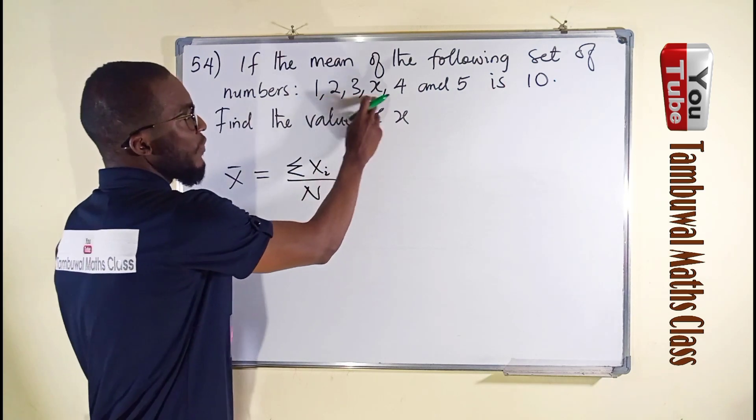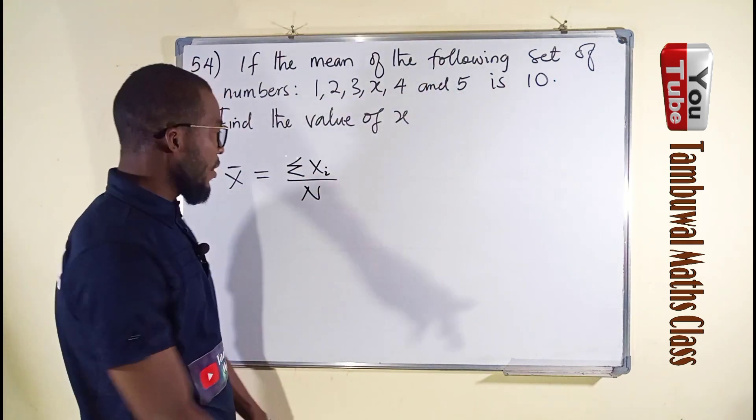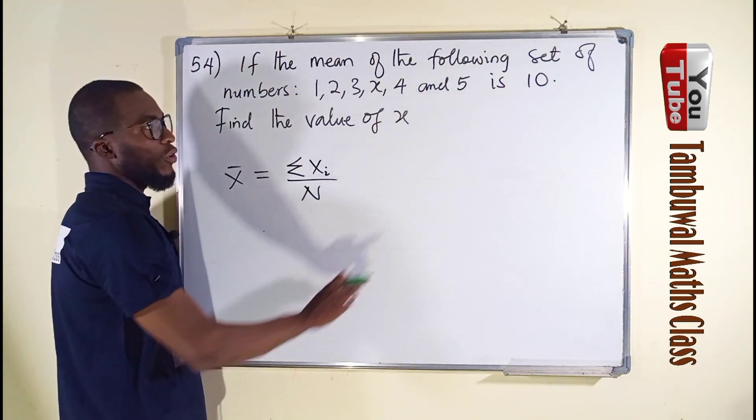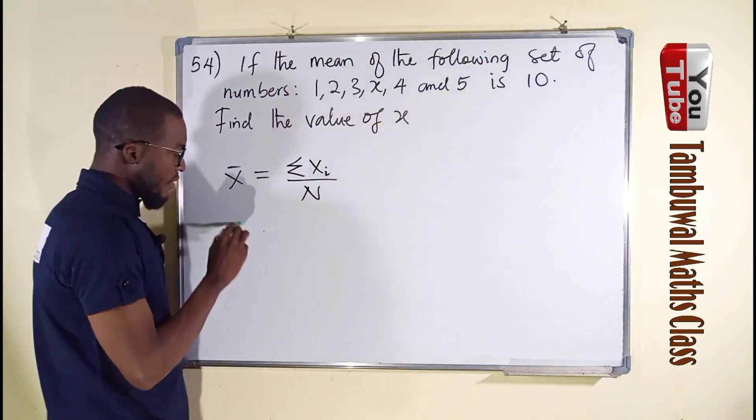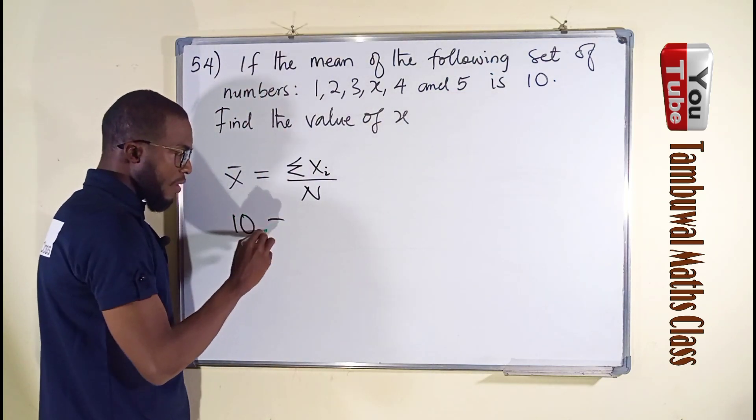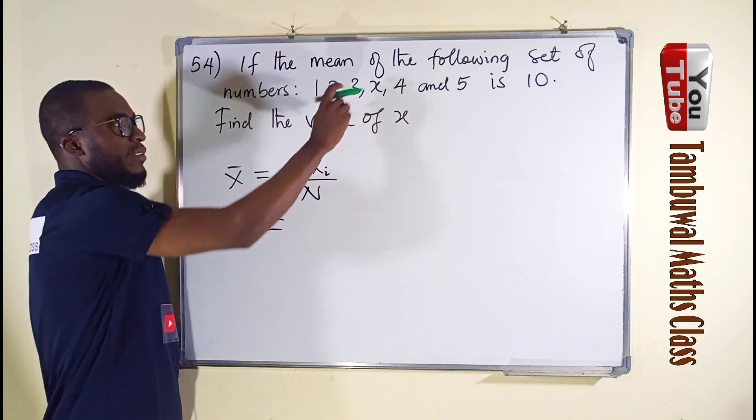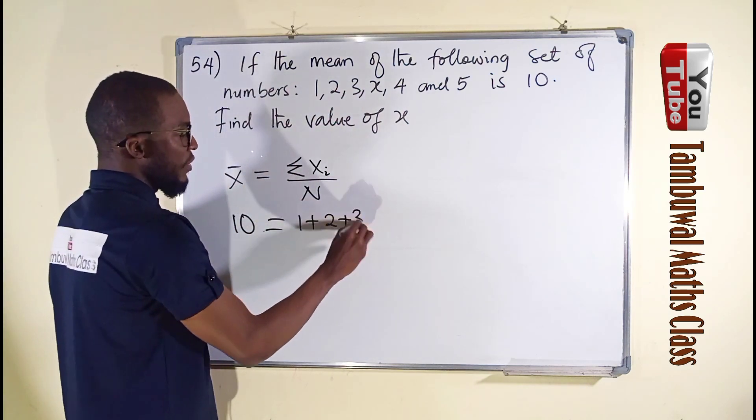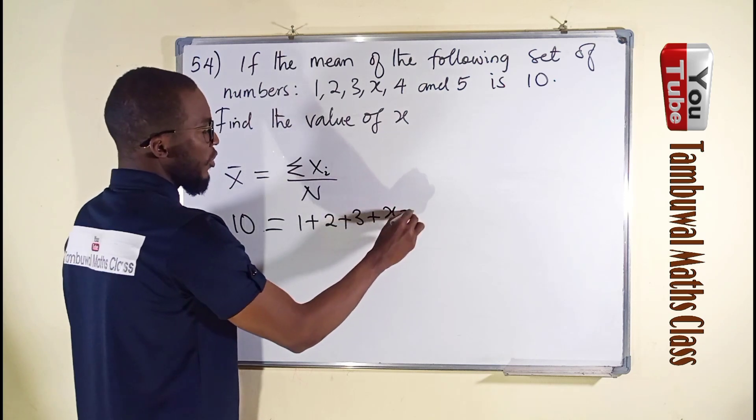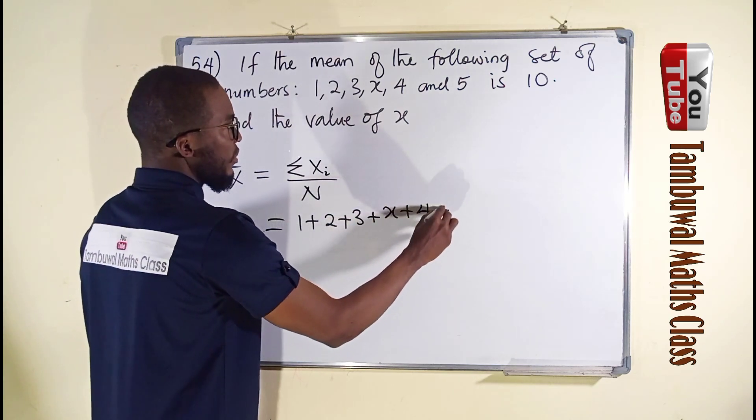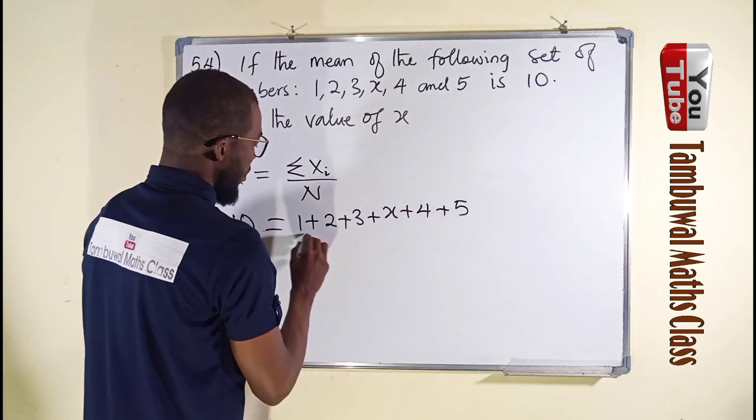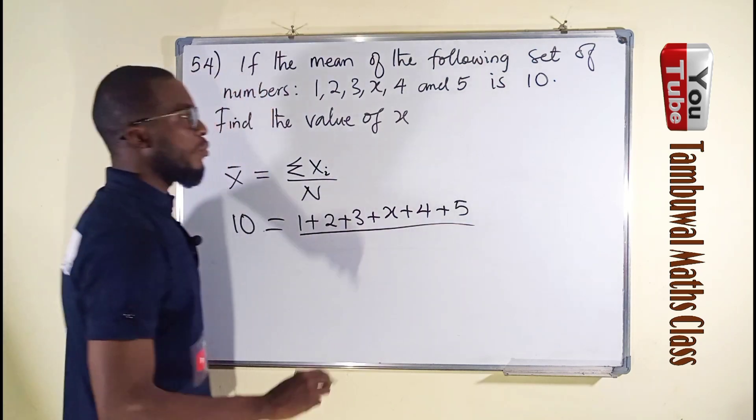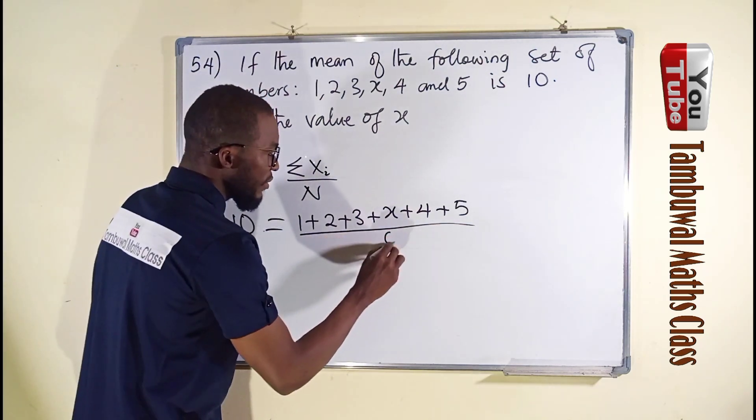The number of items are 1, 2, 3, 4, 5, 6. And x bar is given from the question as 10. So we say 10 equals sum of all these items. We have 1 plus 2 plus 3 plus x plus 4 plus 5, divide by the total number of items, which we have as 6.